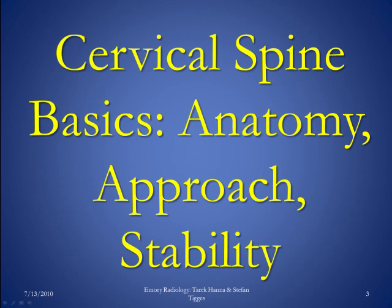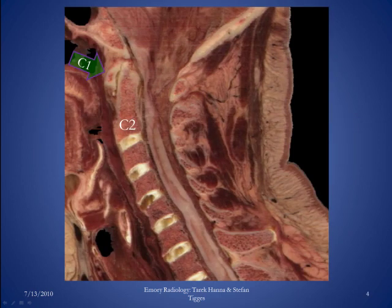We're going to start by looking at the anatomy of the cervical spine, then developing a basic approach to cervical spine radiographs, and then talking about cervical spine stability. This is a sagittal plane anatomic specimen, and there are seven cervical vertebral bodies. The C1 and C2 cervical vertebral bodies are relatively anatomically distinct from the remainder. We've labeled the anterior arch of the C1 vertebral body, as well as the C2 vertebral body. In addition to the vertebral bodies, we have a lot of ligaments as well as intervertebral discs that hold the cervical spine together.